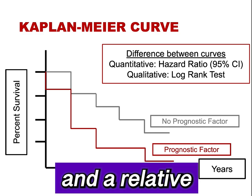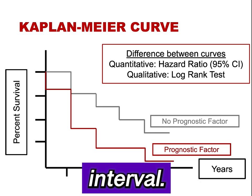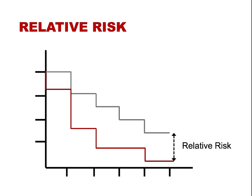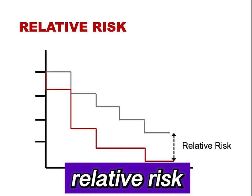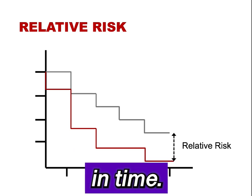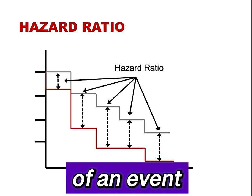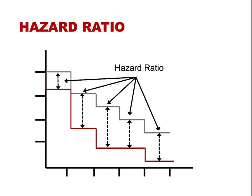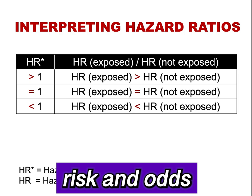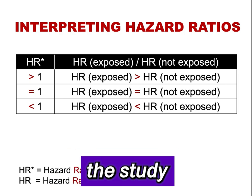Like an odds ratio and relative risk, a hazard ratio is typically paired with a 95% confidence interval. Kaplan-Meier curves are reviewed in a separate MESS Mini. A relative risk or odds ratio can be calculated at the end of the study at a specific point in time. In contrast, a hazard ratio assesses the probability of an event at any point in time over the study period. Hazard ratios are interpreted in the same manner as relative risk and odds ratios, with the difference that they apply to any point in time over the study period.